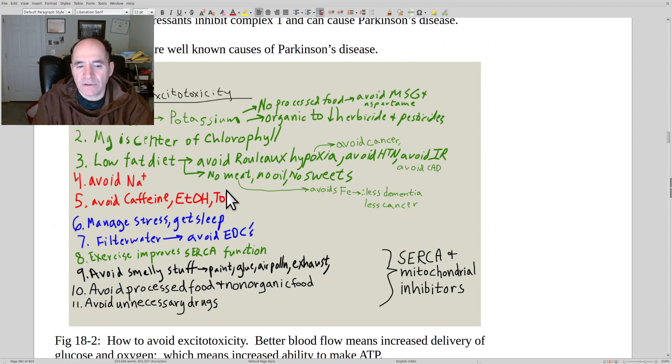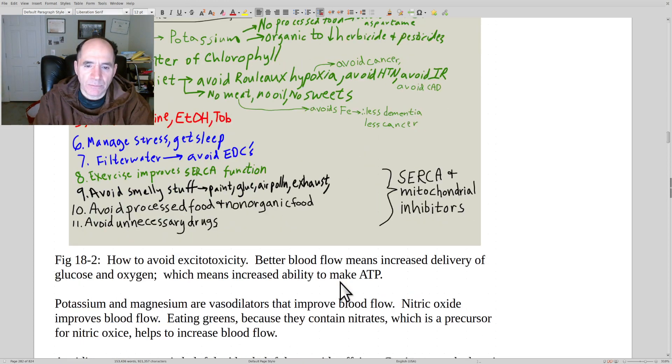How to avoid excitotoxicity. We talked in just the most recent lecture about getting your adequate amounts of potassium and magnesium by eating plant foods. Plus you get your antioxidants that way. You get your nitrates, precursors, and nitric oxide that way. It's all good. Avoiding excessive dietary sodium. Avoiding stimulants. Manage your stress. Filter your water. Get rid of that F minus. Get rid of that aluminum. In general, anything that smells bad tends to be a CERCA inhibitor and or a mitochondria inhibitor. Paints, glues, air pollution, car exhaust. Exercise actually improves mitochondrial function and CERCA function over time.